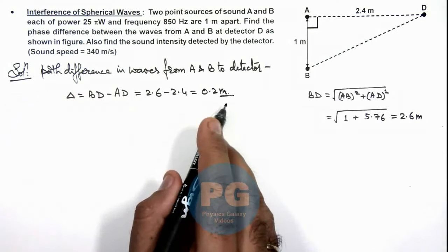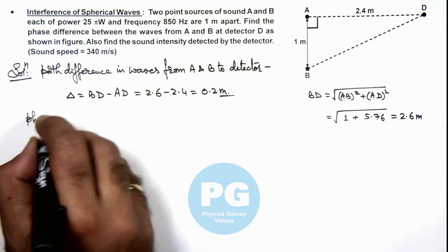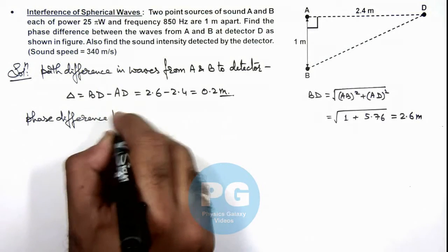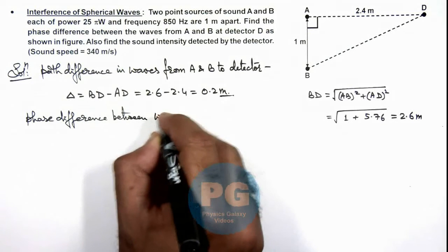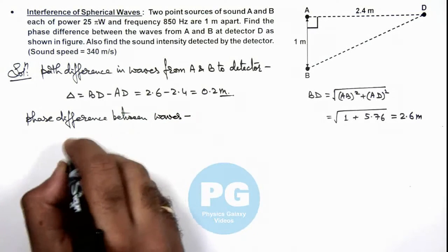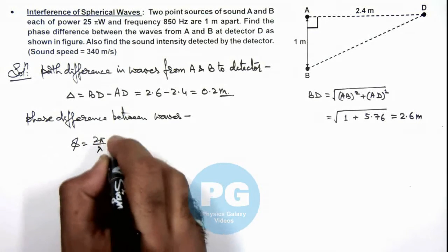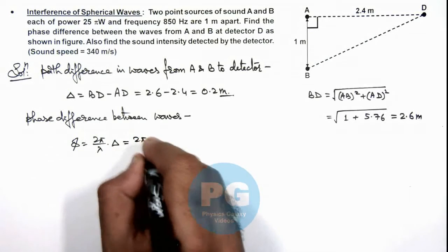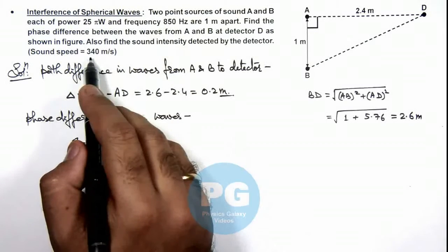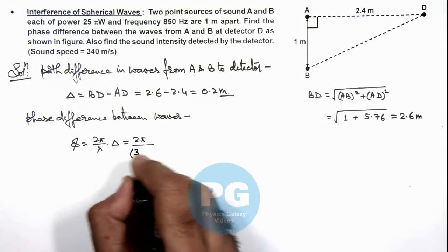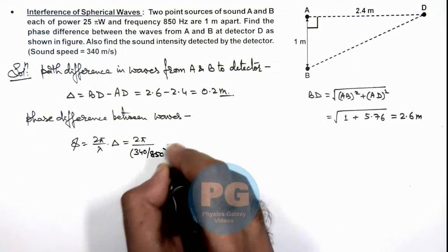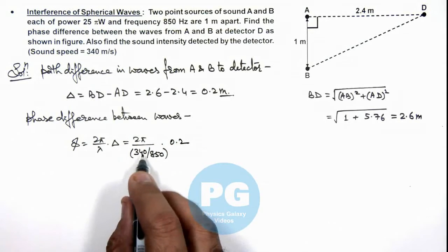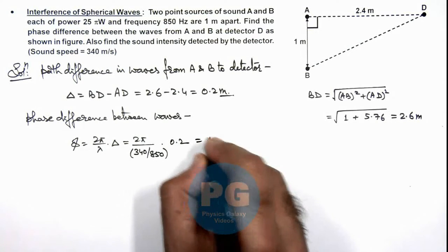As we have got the path difference, we can calculate the phase difference between waves. As φ is equal to 2π/λ multiplied by the path difference, so here it is 2π divided by, as we know the frequency and speed of sound, wavelength we can write as 340/850 multiplied by Δ is 0.2.